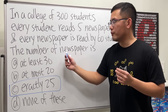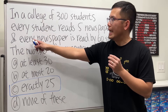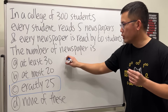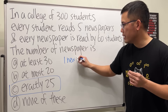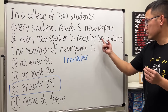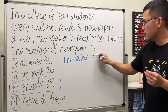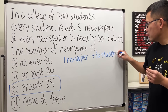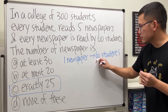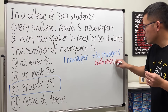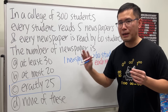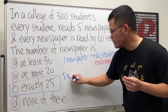Our goal is to find the number of newspapers. Every newspaper is read by 60 students, so imagine if we only have one newspaper — this can satisfy 60 students, and each student just has to read that one newspaper. Now if I multiply this by five, if we have a total of five newspapers...